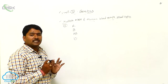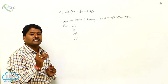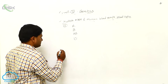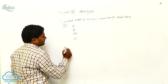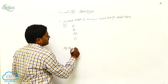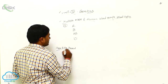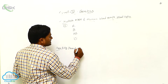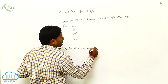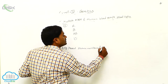Blood groups are determined by the antigens present on the plasma membrane of RBC. How are you determining the blood group? By the type of antigen present on the plasma membrane of RBC.